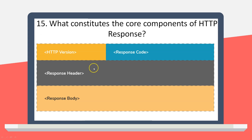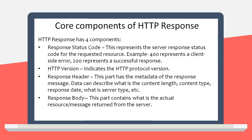Similarly, the core components of an HTTP response are: HTTP version (1.0, 1.1), response status code (200 success, 201 resource created, 400 client error, 404 resource not found, 500 internal server error), response header (metadata: content length, content type, response date, server type), and response body (the actual data returned from the server, e.g., the object returned from a GET call).